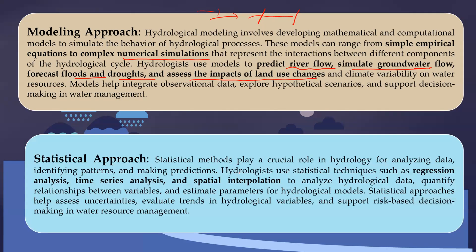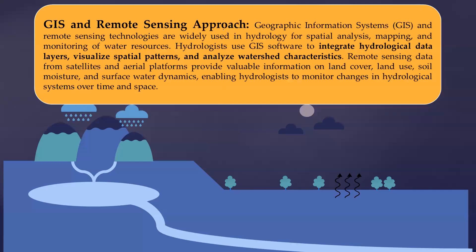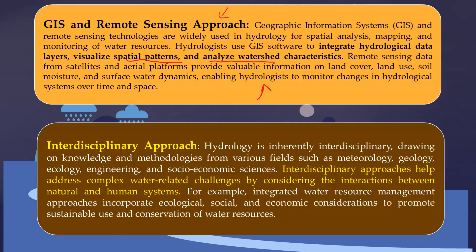The statistical approach uses regression analysis, time series analysis, and spatial interpolation — and plays a very important role in risk assessment and decision making. The GIS and remote sensing approach is the most modern, based on satellite technology and satellite data put into a GIS environment to identify spatial patterns, visualize and analyze changes on the ground. Finally, the interdisciplinary approach connects people from meteorology, geology, ecology, engineering, and socioeconomic sciences to solve challenges together.